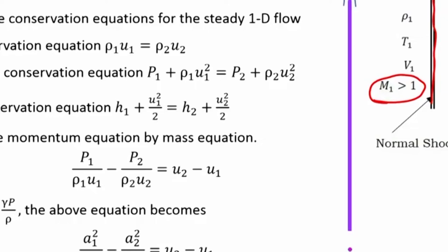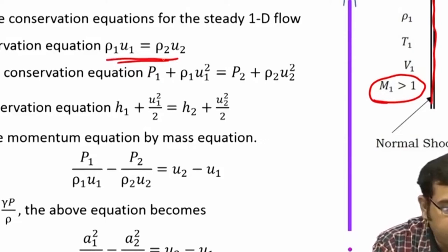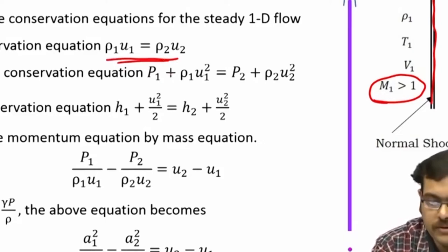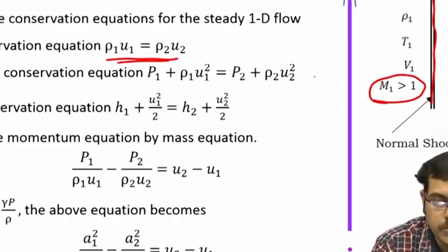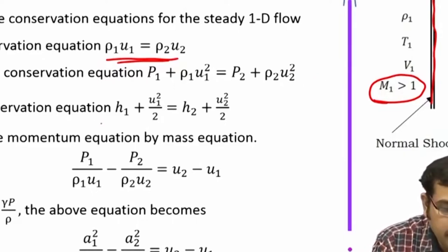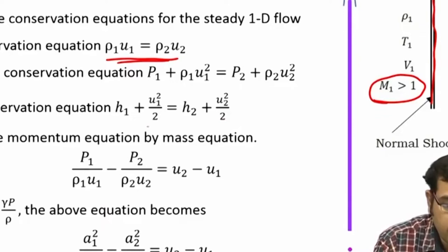The basic equations to apply here are the one-dimensional conservation equations. Mass conservation: ρ₁u₁ = ρ₂u₂. Momentum conservation in one dimension: p + ρu² is constant, so p₁ + ρ₁u₁² = p₂ + ρ₂u₂². Energy conservation: h₁ + u₁²/2 = h₂ + u₂²/2.